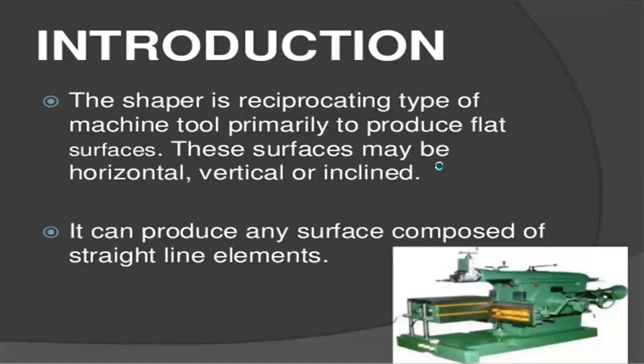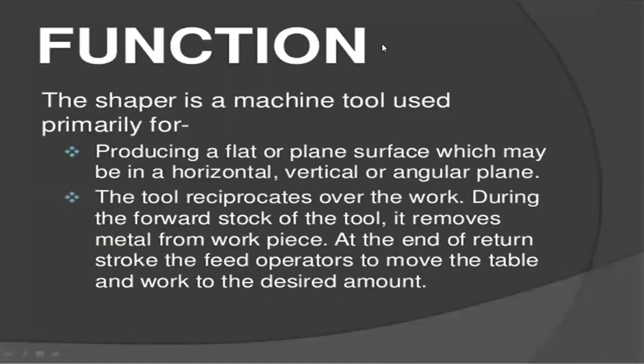The function of the shaper machine is that it is a machine tool used for producing flat or plain surfaces which may be in horizontal, vertical, or angular planes. The tool reciprocates over the work. During the forward stroke of the tool, it removes metal from the workpiece. At the end of the return stroke, the feed operates to move the table and work to the desired amount.